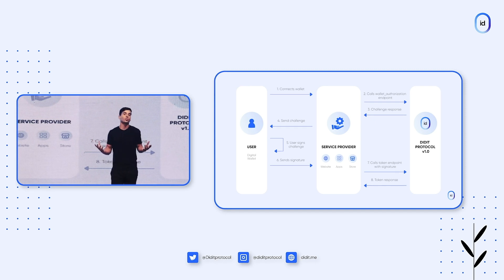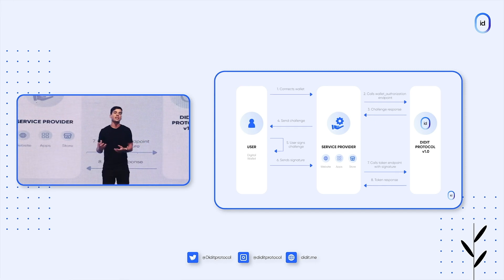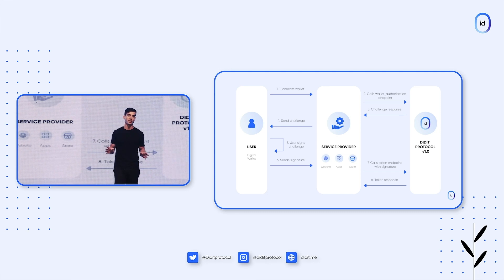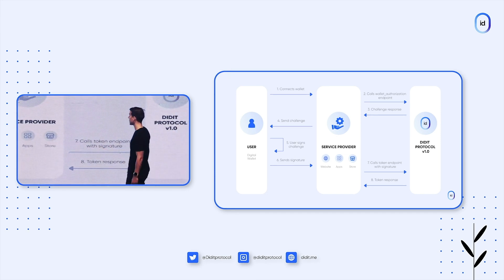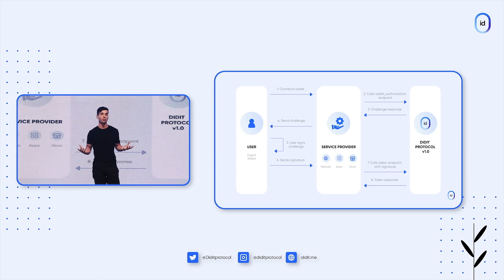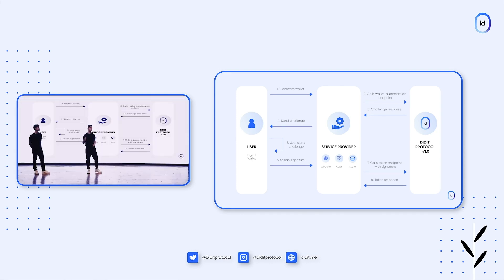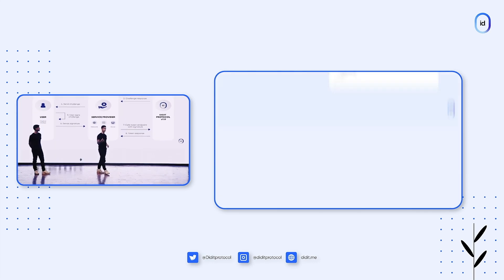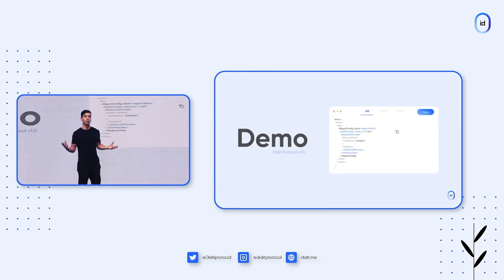If you're a developer, you don't have to worry about implementing this flow manually. You can just implement the Didit SDK and everything happens behind the scenes. Anyway, it's just two API endpoints — the wallet authorization and token endpoint. So if you want to implement your own flow, it's also pretty easy to do in just a few lines of code. We are going to show a demo now, so businesses that want to integrate Didit know how to do it very easily.